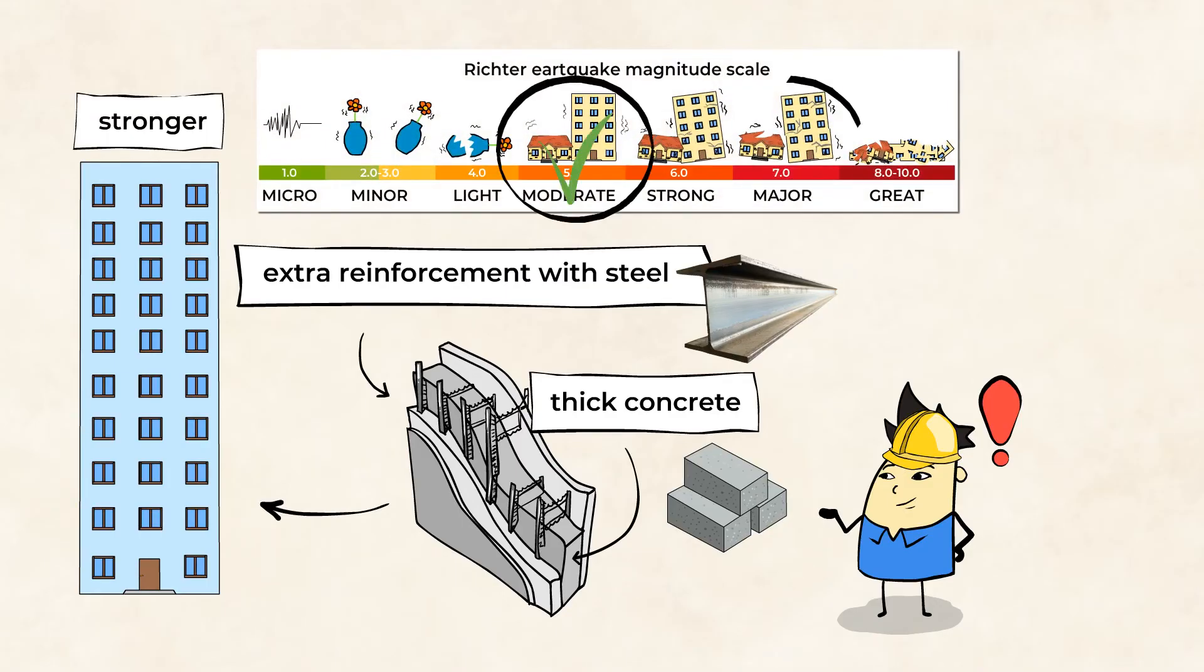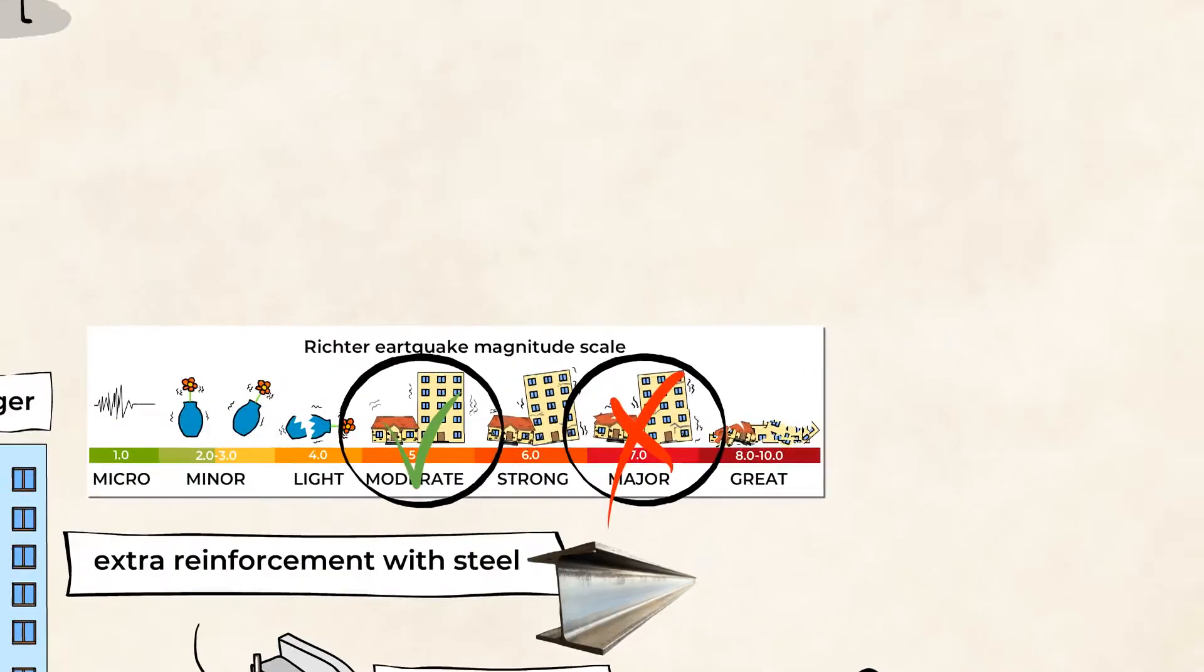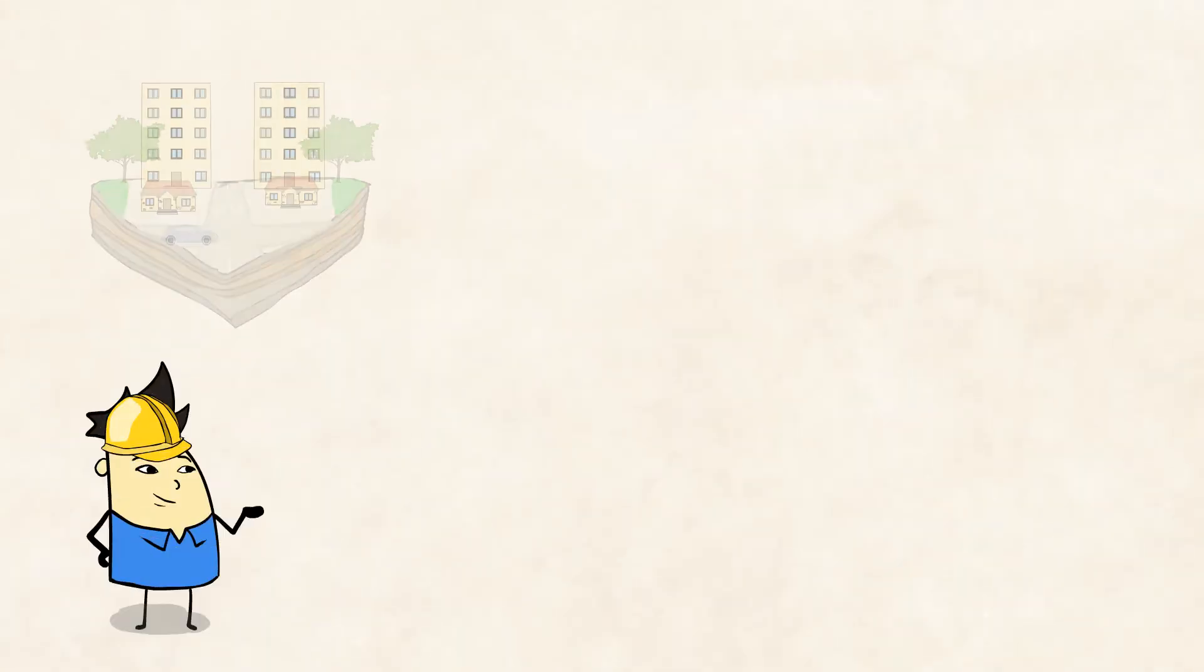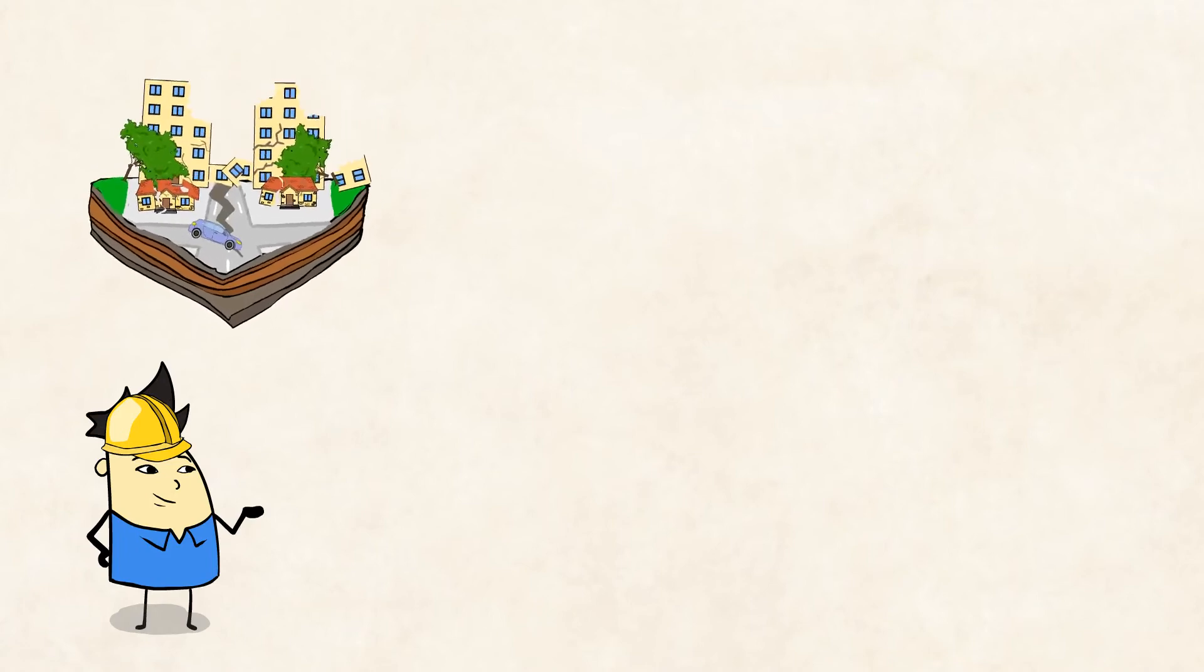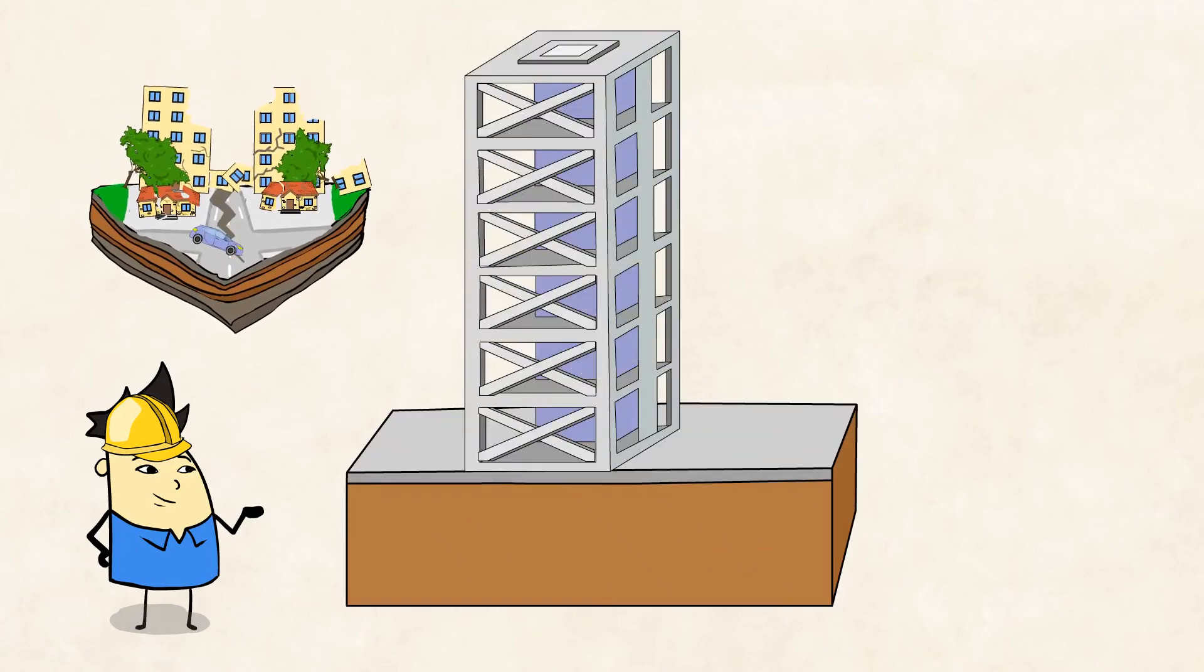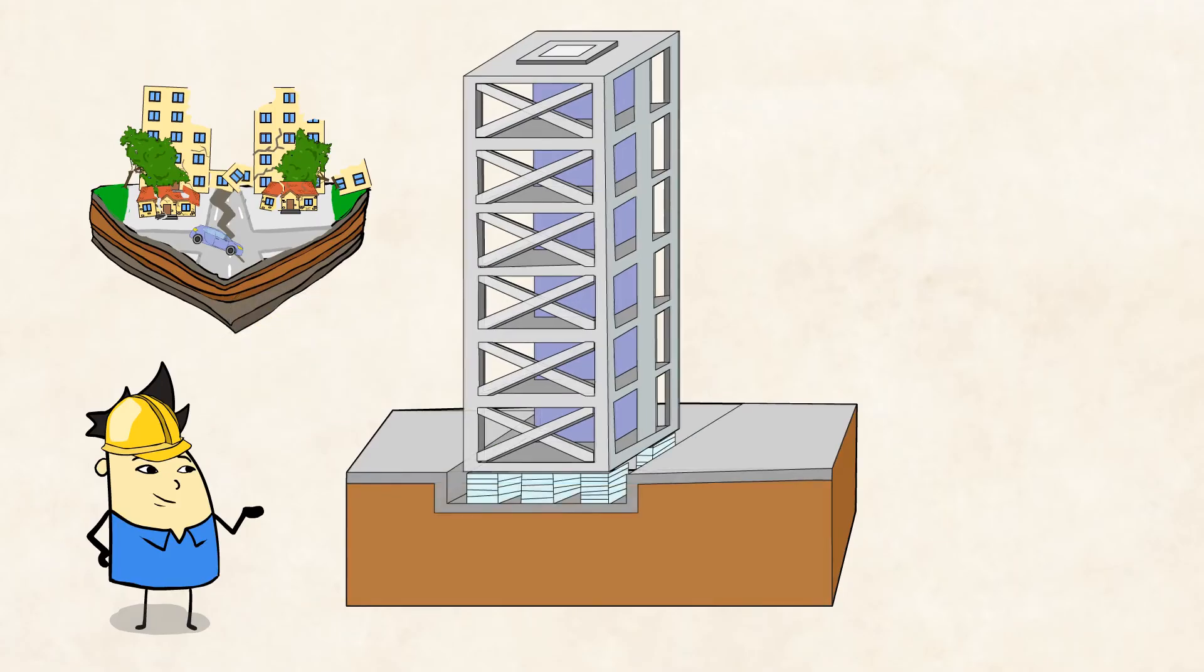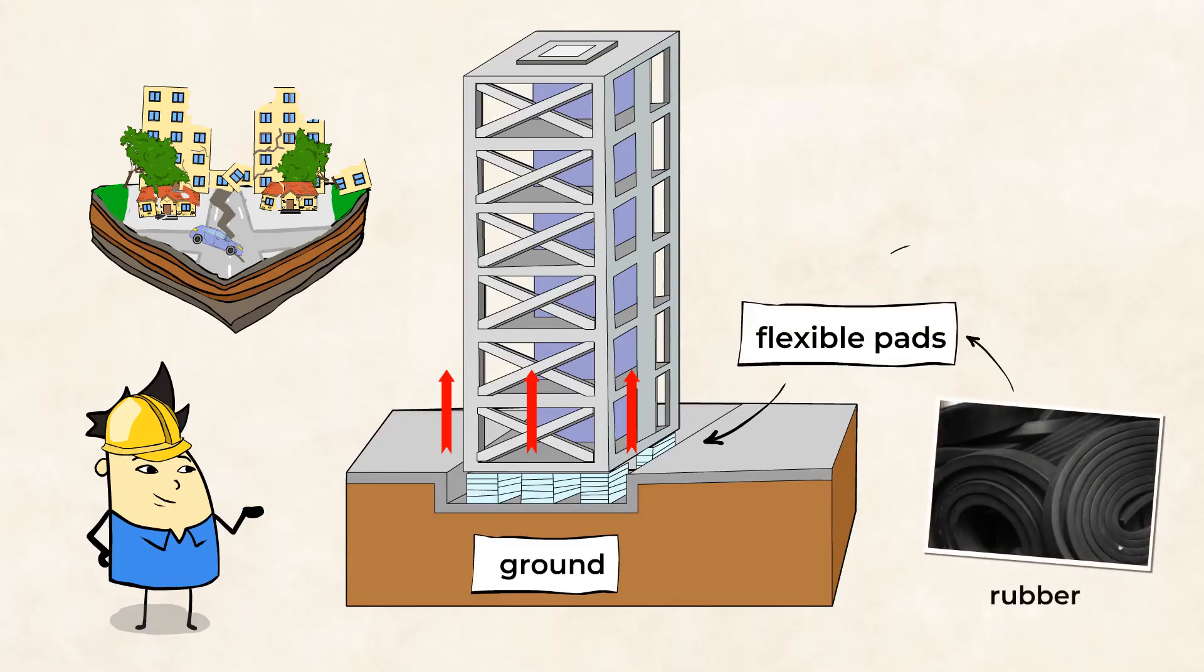But in places where severe earthquakes occur, it may not be enough. The way to protect buildings from earthquakes is to prevent them from shaking when the ground shakes. Engineers have come up with an amazing way to do this. They create structures that lift the building off of the base or foundation of the building using flexible pads created from rubber and metal.